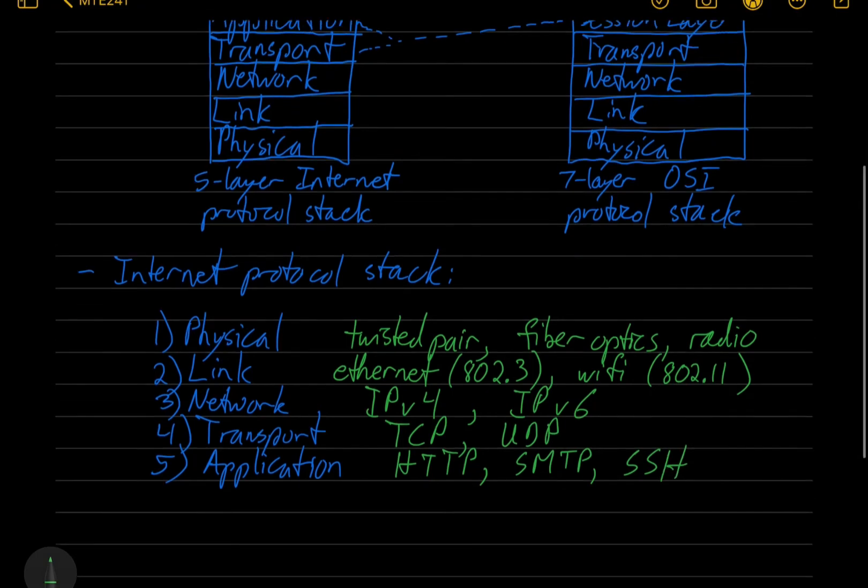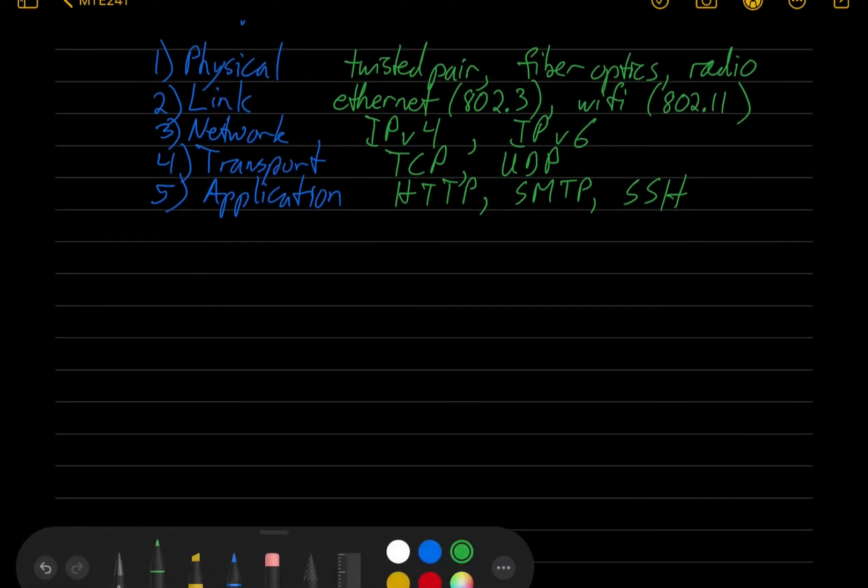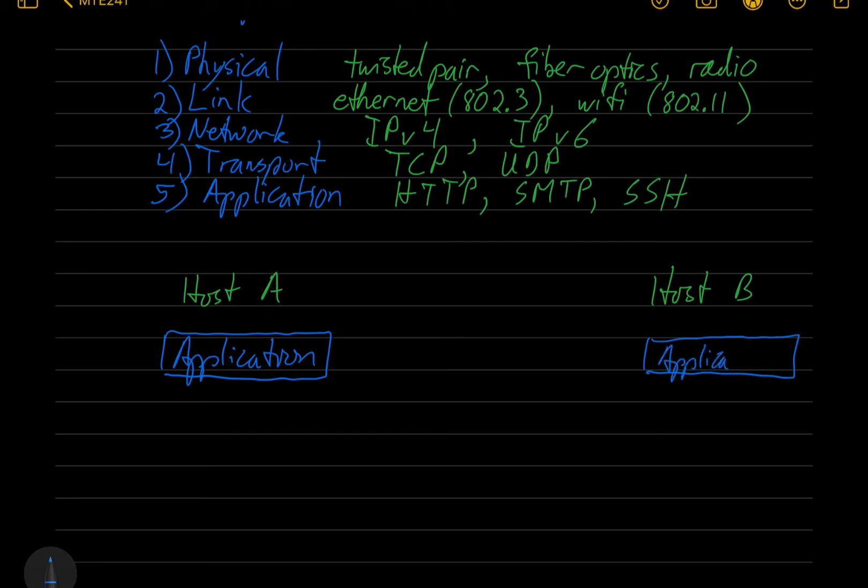Let's draw a picture of what this looks like. In networking, the computers that are communicating are called hosts. We're going to have host A and over here host B. At the top here we've got an application running on host A, let's say a web browser, and it wants to communicate with an application on host B, such as a web server.